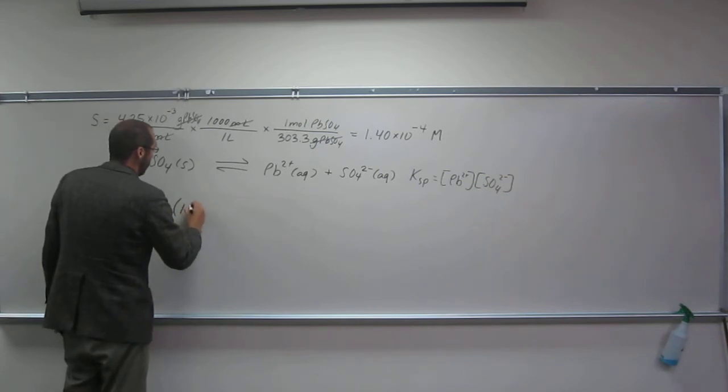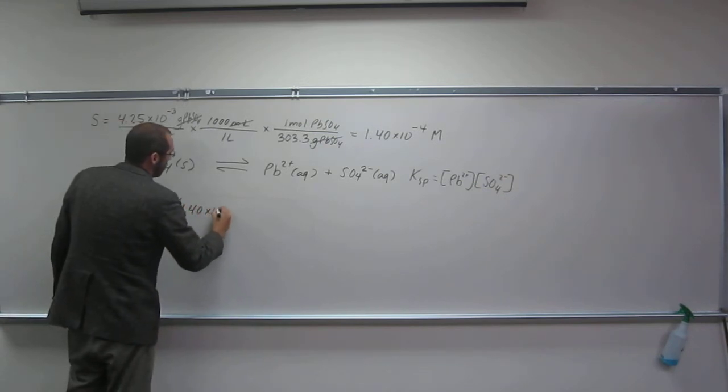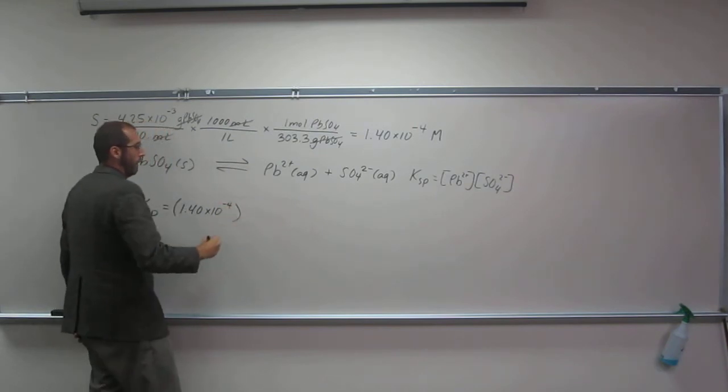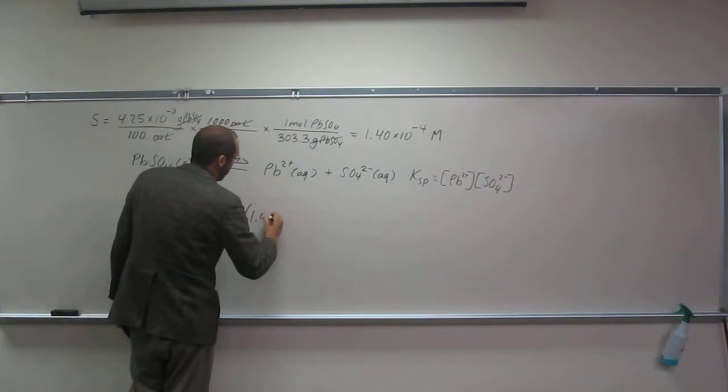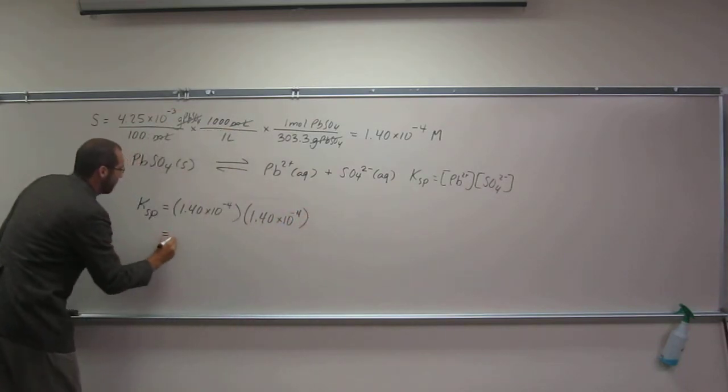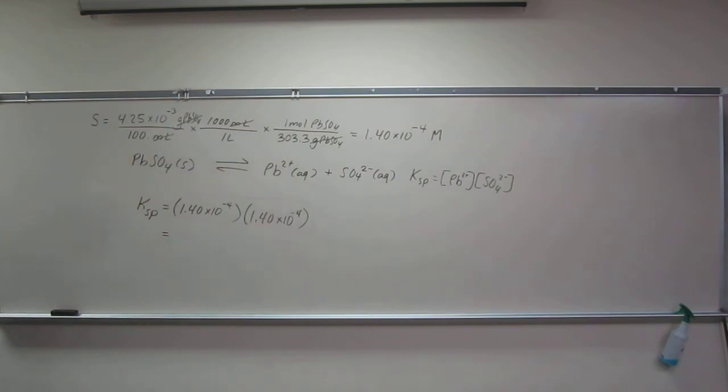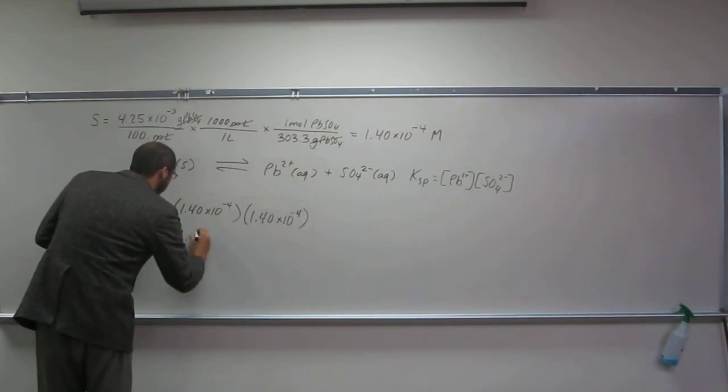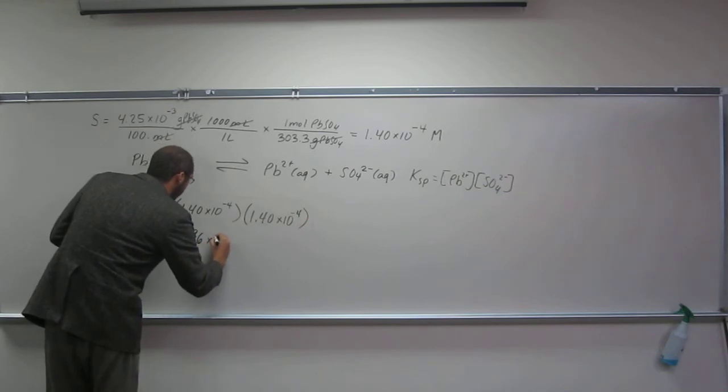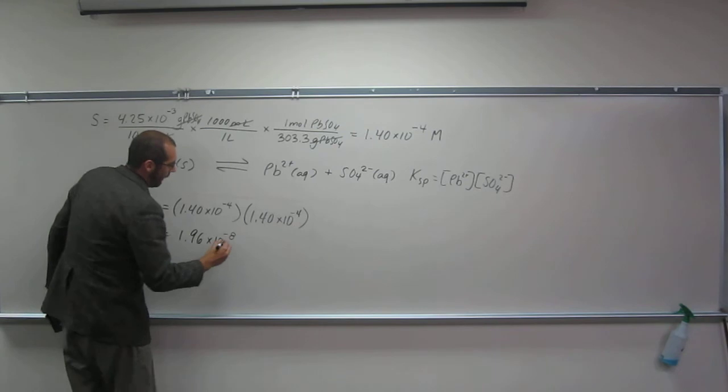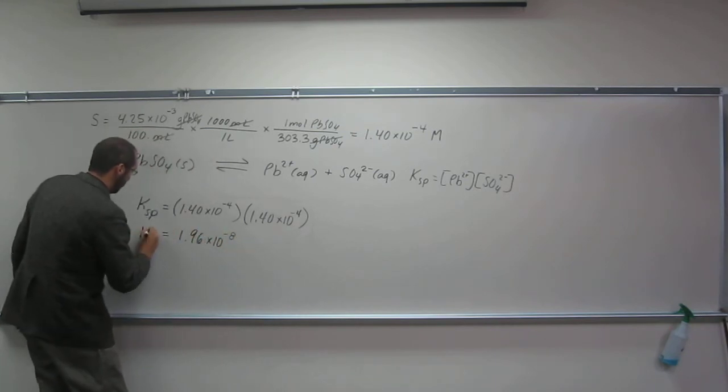In order to do this, 1.40 times 10 to the negative 4, and I'm not going to put any units in to not confuse myself. I get 1.96 times 10 to the negative 8, and that's your Ksp.